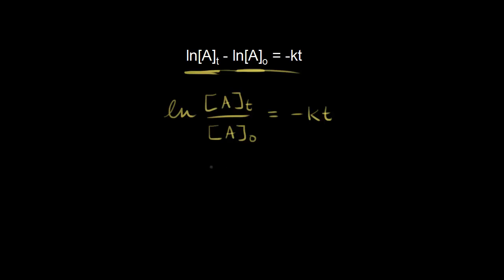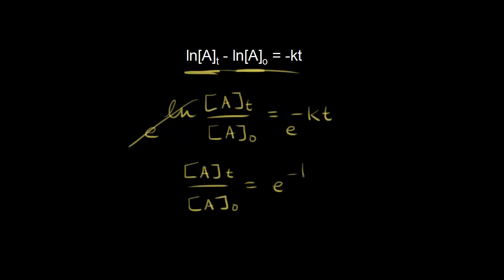Next, we need to get rid of our natural log, so we're going to exponentiate both sides — take e to both sides — and that's going to get rid of our natural log. So now on the left side we have our concentration over the initial concentration, and on the right side we have e to the negative kt. We're going to multiply both sides by the initial concentration of A, so we get that our concentration of A at time t is equal to the initial concentration of A times e to the negative kt.